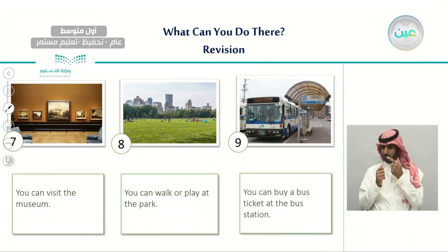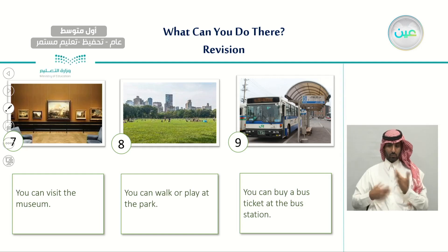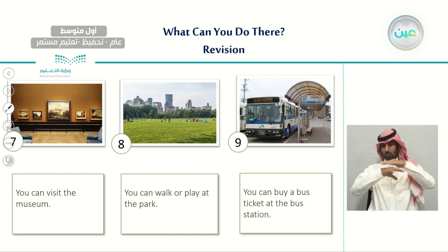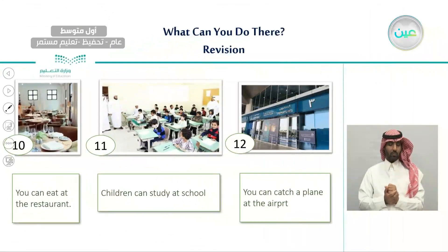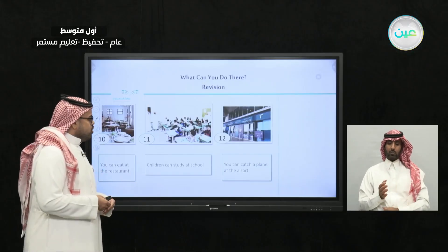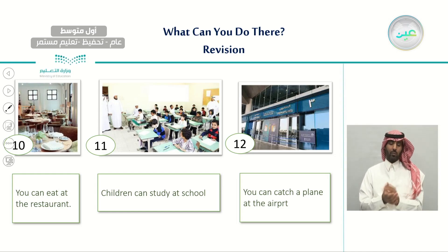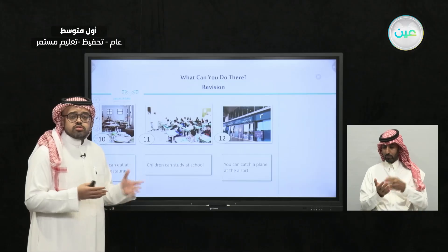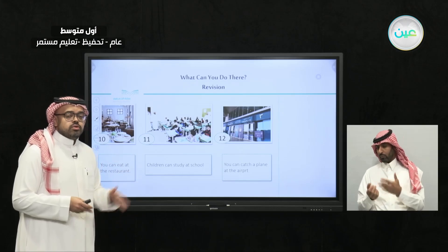At the supermarket, we can buy fruit, vegetables, and groceries. At the museum, we can visit and enjoy the art. At the park, we can walk or play. At the bus station, we can buy a ticket to travel. At restaurants, we can enjoy food and try different tastes. Children can study at school, and at the airport, you can catch a plane.